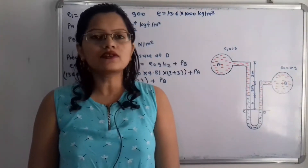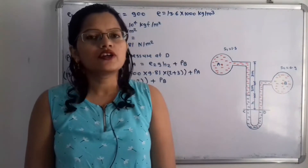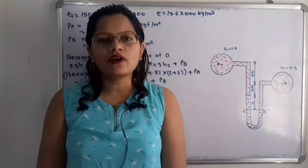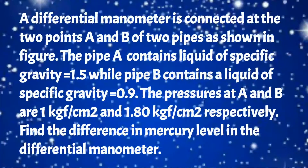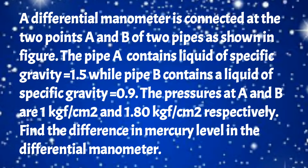Hello friends, this is Priyanka. Today we are going to solve a problem on a differential manometer. A differential manometer is connected at two points A and B of two pipes as shown in the figure. The pipe A contains liquid of specific gravity 1.5, while pipe B contains liquid of specific gravity 0.9. The pressures at A and B are 1 kgf/cm² and 1.80 kgf/cm² respectively. Find the difference in mercury level in the differential manometer.